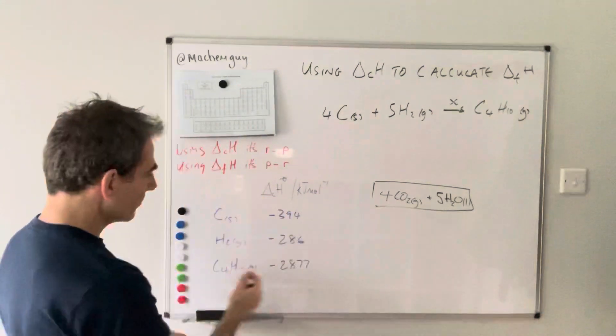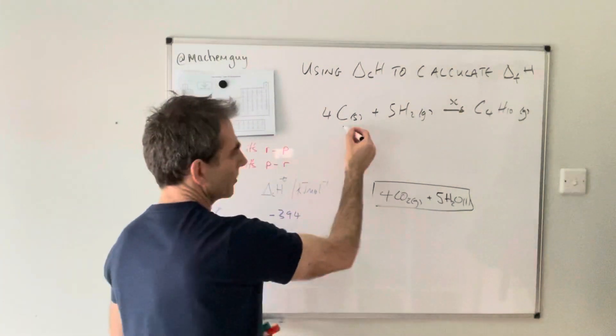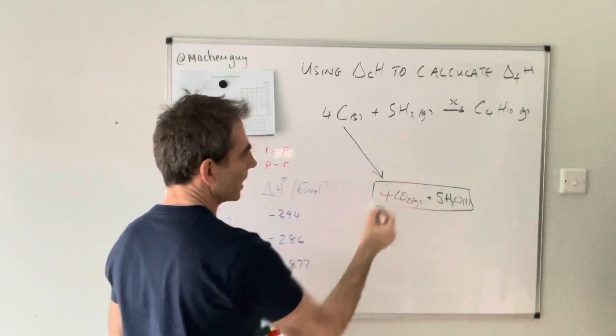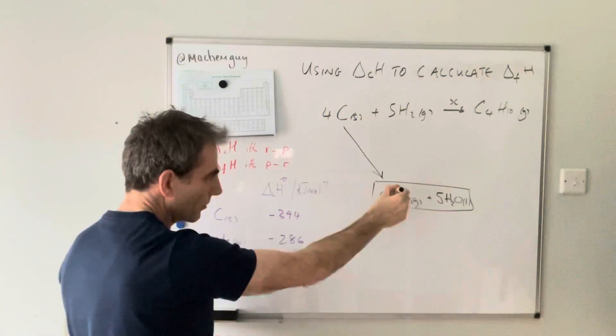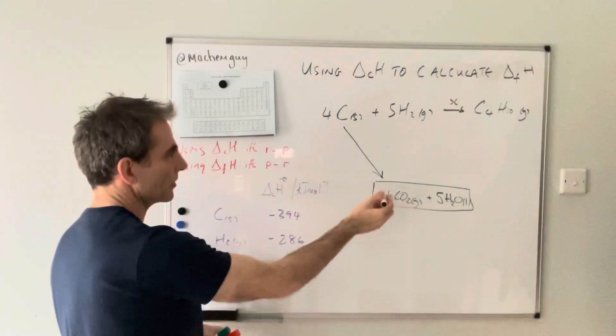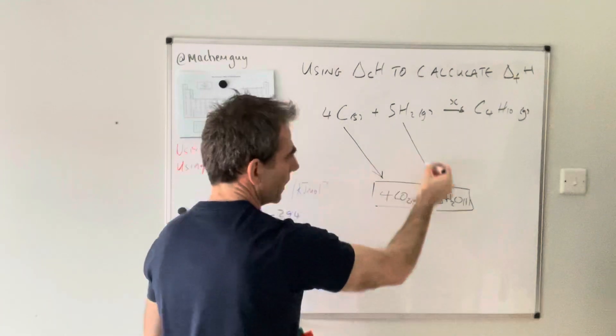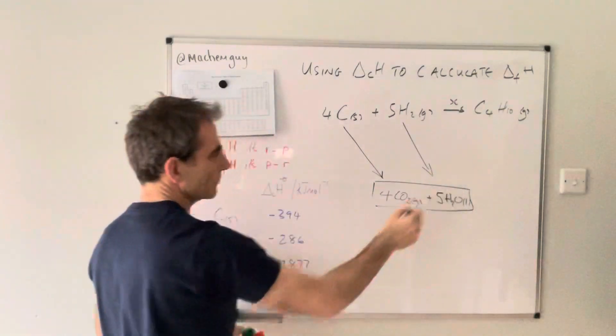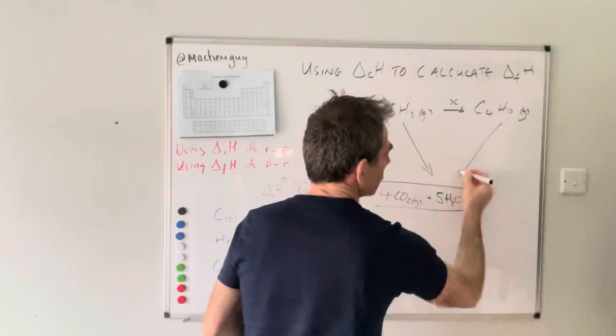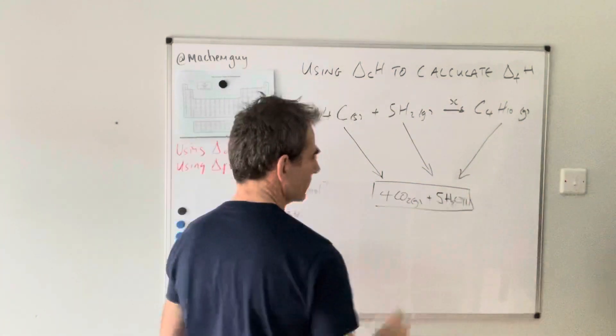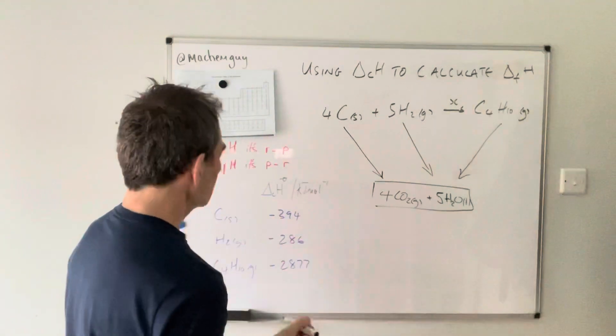Because we've got these combustion values, we can construct a cycle. The arrow for that would be down there. Combustion of four moles of carbon gives four moles of carbon dioxide. Five moles of hydrogen gives five moles of water. And one mole of butane gives four moles of CO₂ and five moles of water.